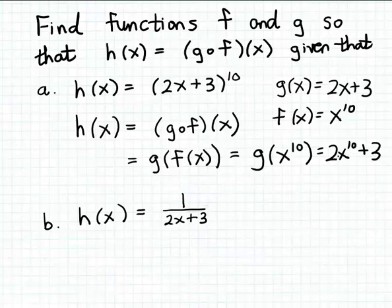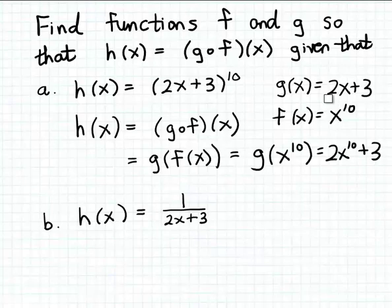That's promising — it's almost the formula for h. But it's not quite right, because we need the formula for h to be the quantity 2x plus 3 raised to the 10th power, not just 2 times x to the 10th power plus 3. So these two choices for g and f weren't quite correct. However, we're pretty close, so what I'm going to do is simply reverse these two formulas.